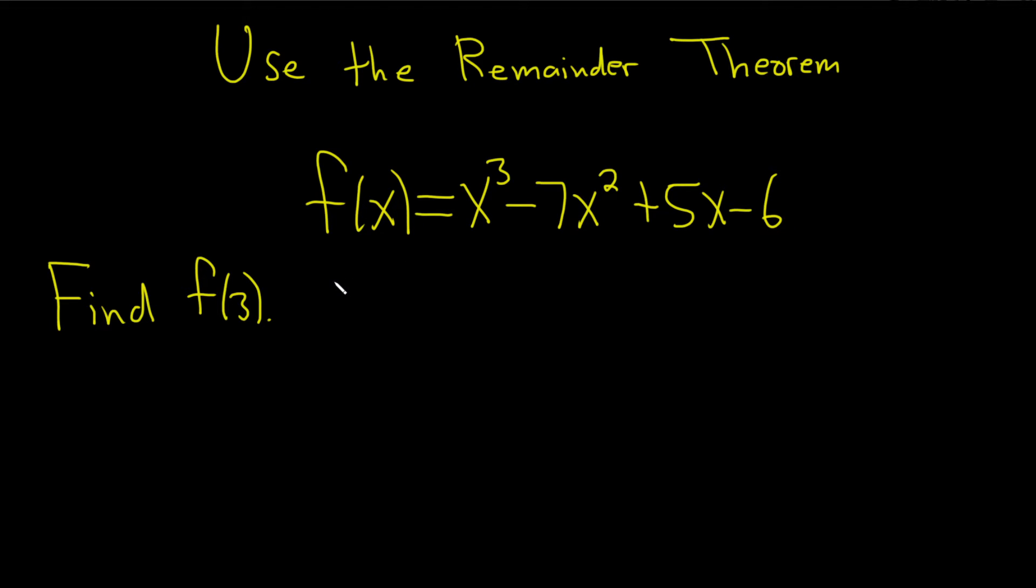However, in this problem, the question wants us to use the remainder theorem, so let's go ahead and do it that way. The remainder theorem says when you divide a polynomial by x minus c, then the remainder is equal to f of c.